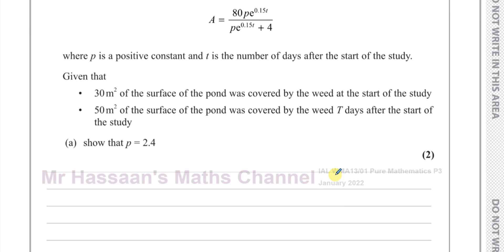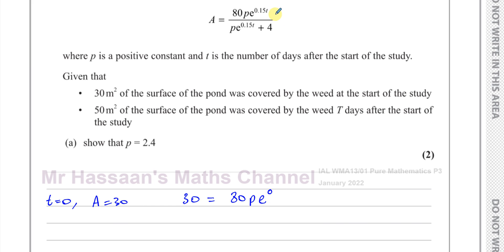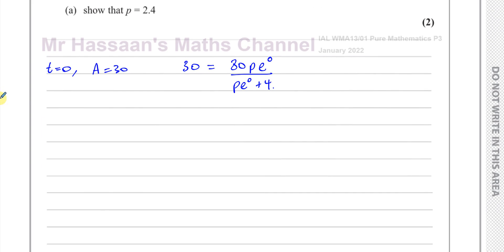So 30 meters squared was covered by the weed at the start of the study — that means when T equals 0, A was 30. We replace A with 30 and T with 0. This gives us 80 times P·e to the power of 0, over P·e to the power of 0 plus 4. Since e to the power of 0 equals 1, anything to the power of 0 equals 1, this simplifies to 80P over P plus 4.